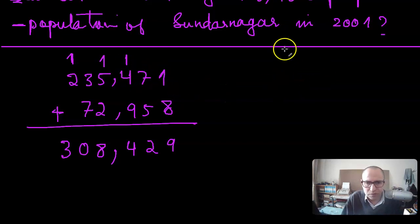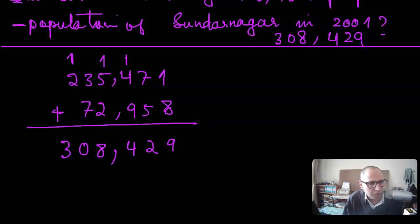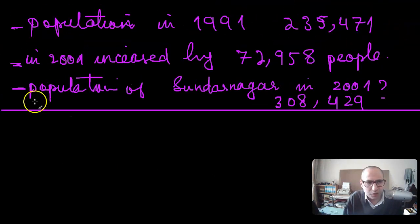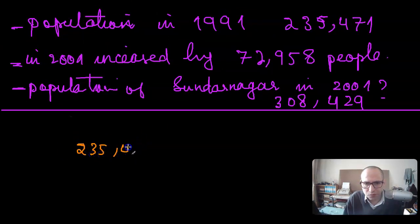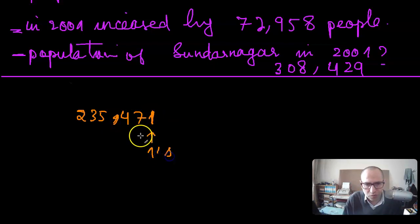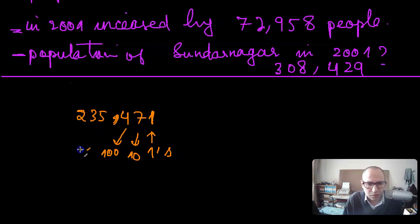So the answer is 308,429 — that is the population of Sundar Nagar in 2001. Now, there is something else we can do with numbers. Remember that a number like 235,471 is a decimal number. It has a ones place value, a tens place value, a hundreds place value, a thousands place value, ten-thousands, and hundred-thousands — and it just keeps going.